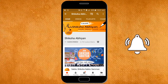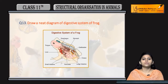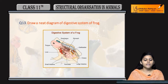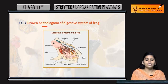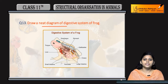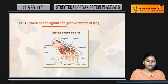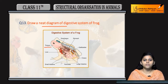Question number 13: draw a neat diagram of the digestive system of a frog. The alimentary canal goes from mouth to cloaca. Starting with the mouth, the tongue is present along with salivary glands, and from there it goes to the esophagus.